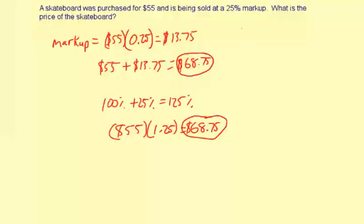You can see there are two different ways to find the markup price. You can use the amount of the markup method where you find the dollars you're adding to the price, or you can use the percent method where you add the percents first and then multiply by the original price. Either way gives you the exact same answer.